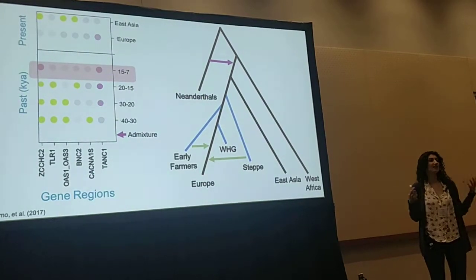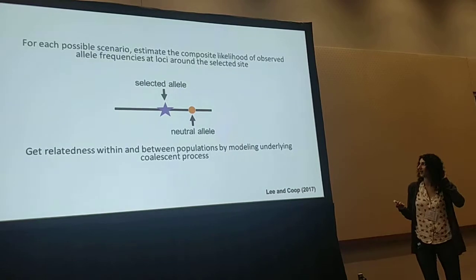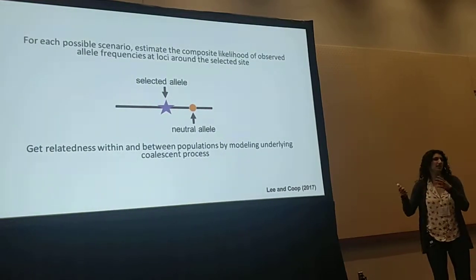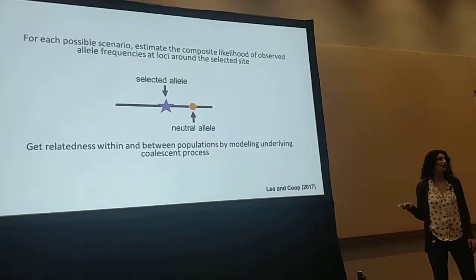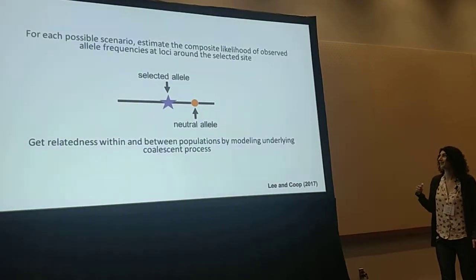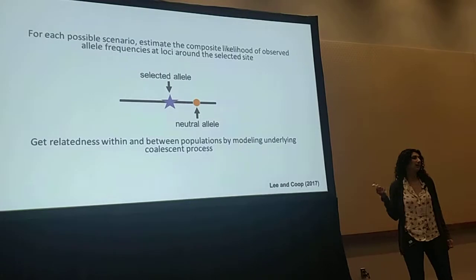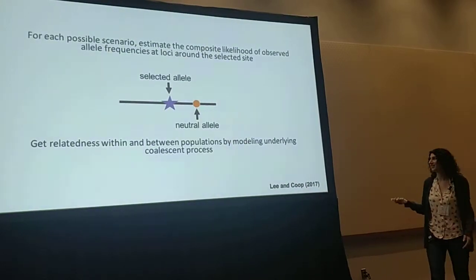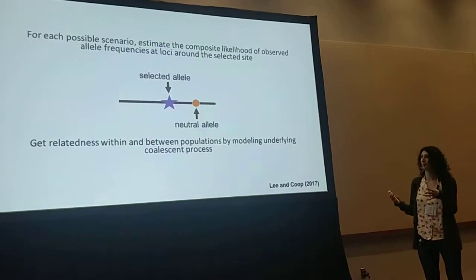I'm going to share a method that can incorporate this known demographic history with tests for selection. We build on a framework introduced by Kristin Lee and Graham Coop, in which for each possible scenario — each scenario being a case of selection in different populations, or different branches of the admixture graph — we estimate the composite likelihood of observed allele frequencies at loci around the selected site. By looking at these loci we're essentially looking at hitchhiking, and we model the underlying coalescent process. Kristin did this for cases with rare migration; today I'm sharing the method extended to much more complex admixture histories.